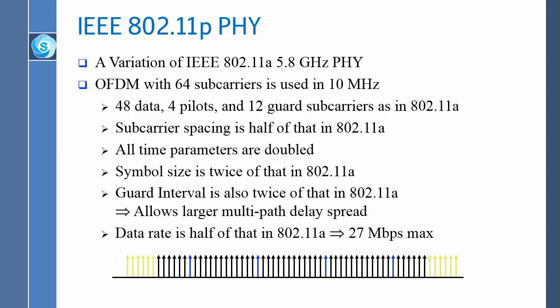The subcarrier spacing in 802.11p is half of that in 802.11A. As electronics improves, subcarrier spacing can be made smaller and smaller, making data symbols larger. Since spacing is half, and T equals 1 divided by the spacing, the symbols are twice as long.